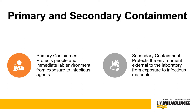Examples of primary barriers include safety equipment such as biosafety cabinets, enclosed containers, and safety centrifuge cups. Occasionally, when it is impractical to work in a biosafety cabinet, personal protective equipment such as laboratory coats and gloves may act as the primary barrier between personnel and infectious materials.